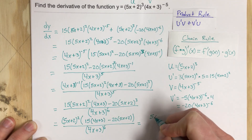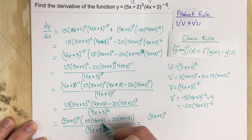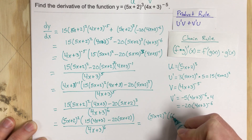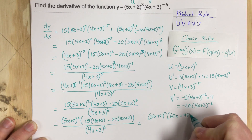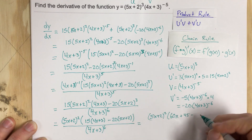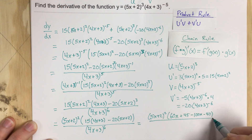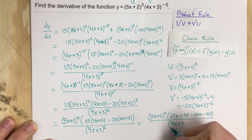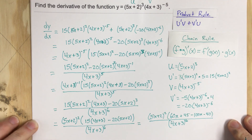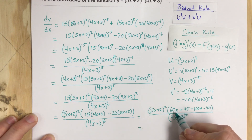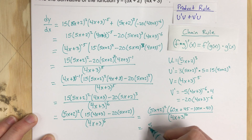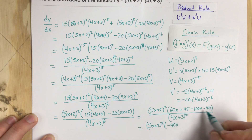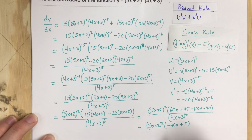We end up with 5x plus 2 squared, and distributing the 15 gives 60x plus 45, and 20 times 5 is 100, so minus 100x minus 40, all over 4x plus 3 to the sixth. Combining like terms: 60x minus 100x is negative 40x, and 45 minus 40 is plus 5. So the simplified derivative is 5x plus 2 squared times negative 40x plus 5, all over 4x plus 3 to the sixth.